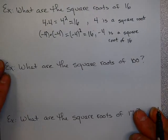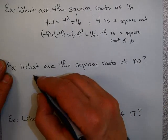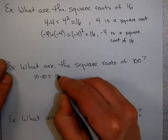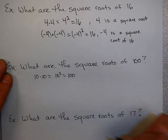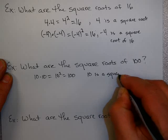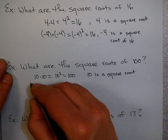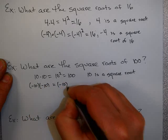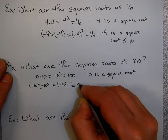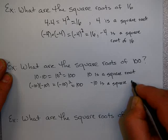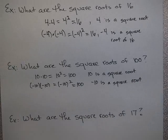So, what are the square roots of 100? Well, again, if you just think about it, 10 times 10, or 10 squared, equals 100. So 10 is a square root. And minus 10 times minus 10, which is minus 10 squared, is 100. So minus 10 is also a square root. It's not too hard to imagine that there are always two square roots of every positive number.